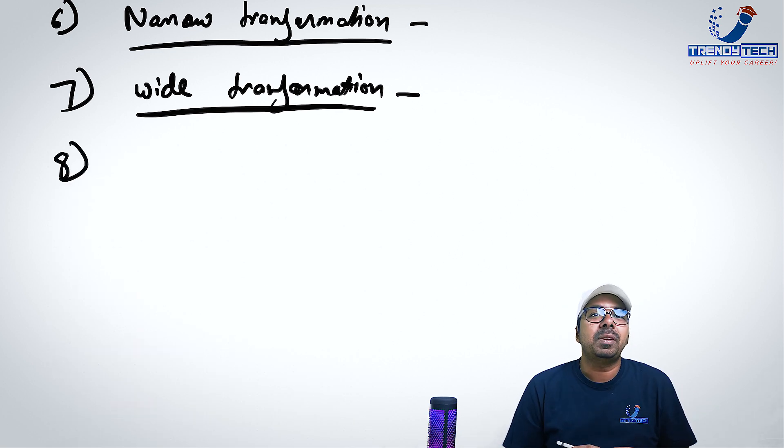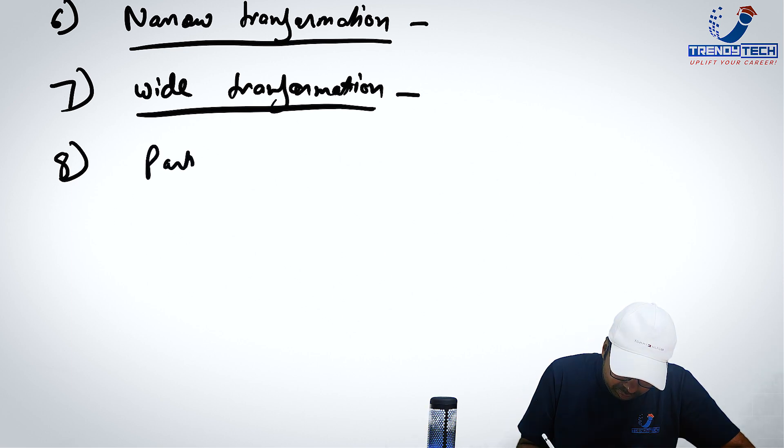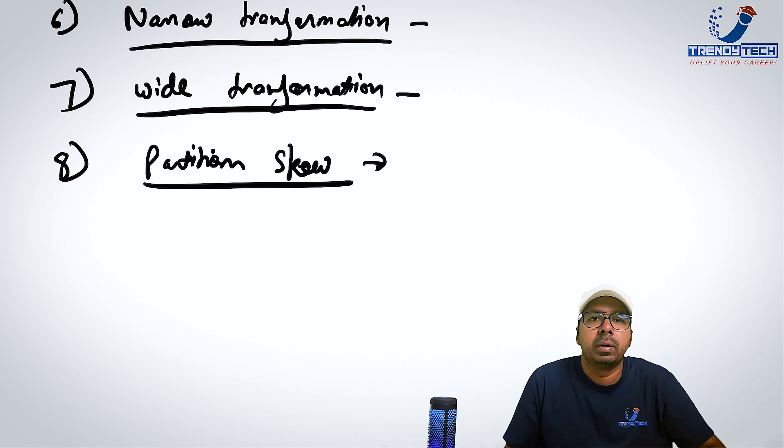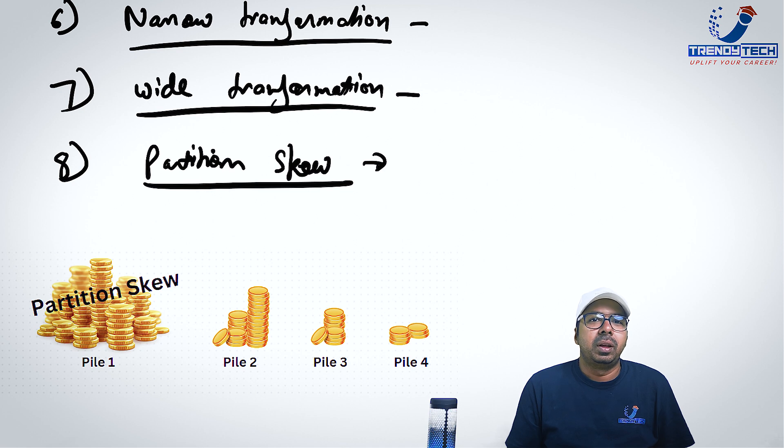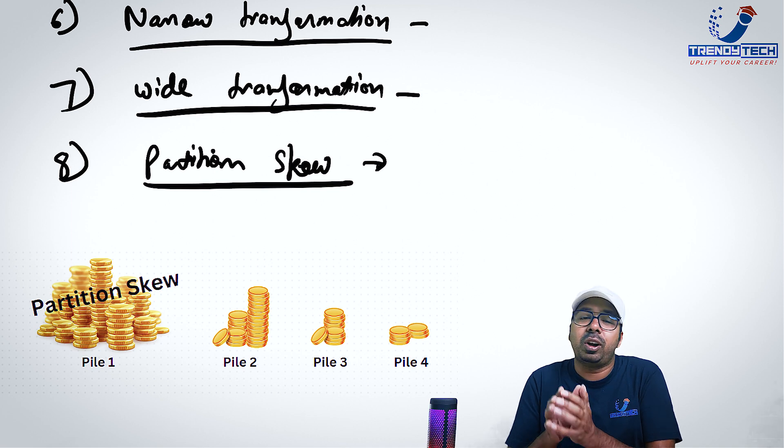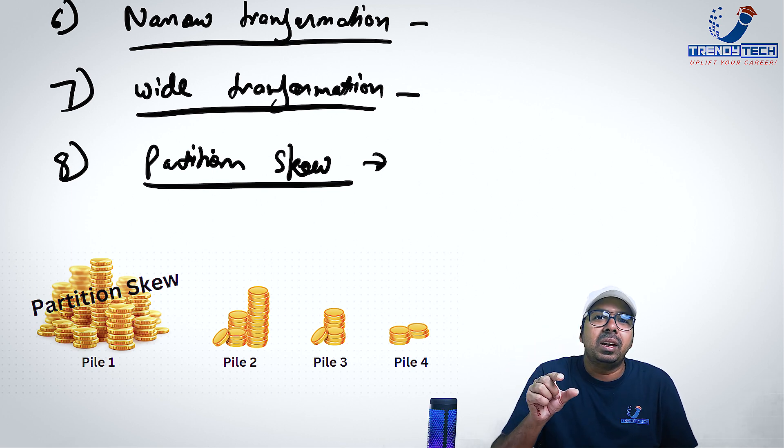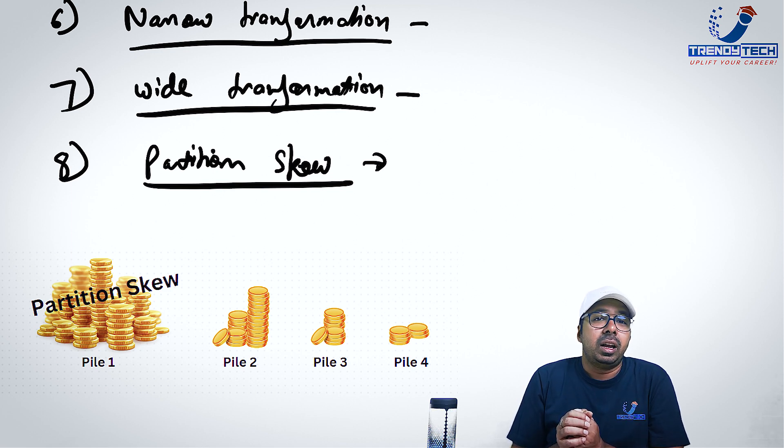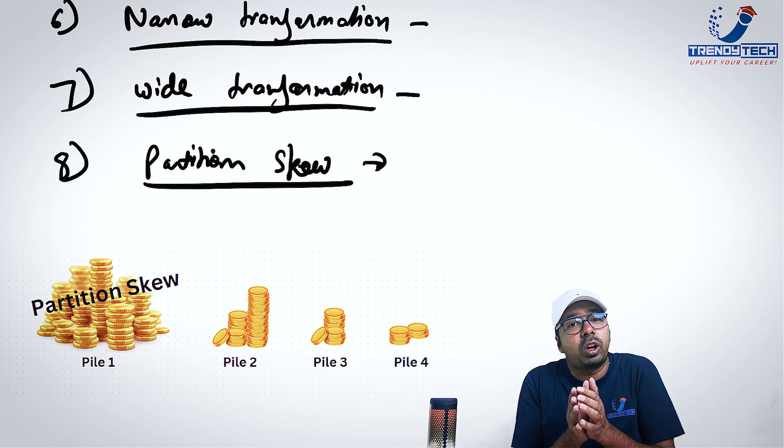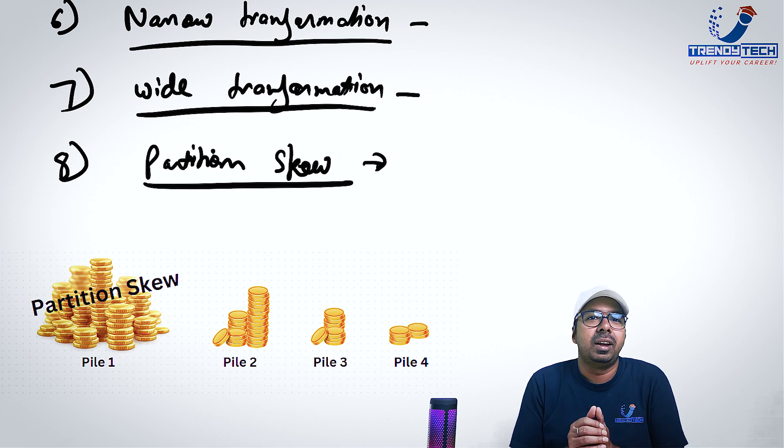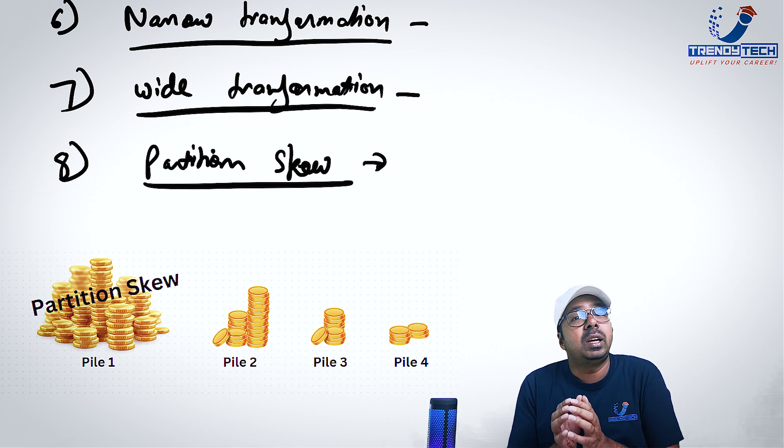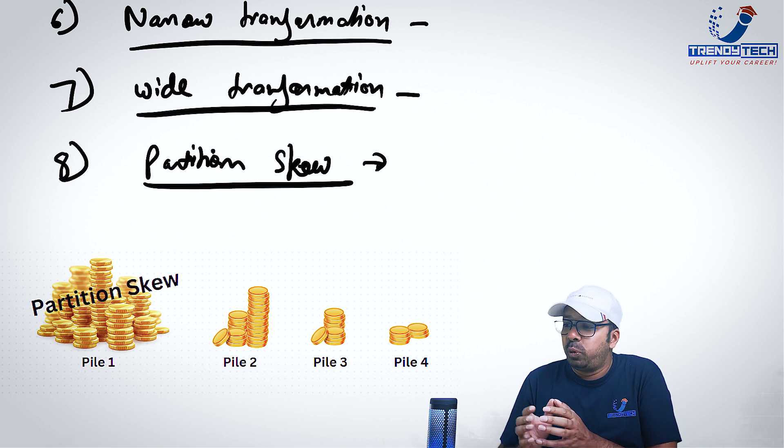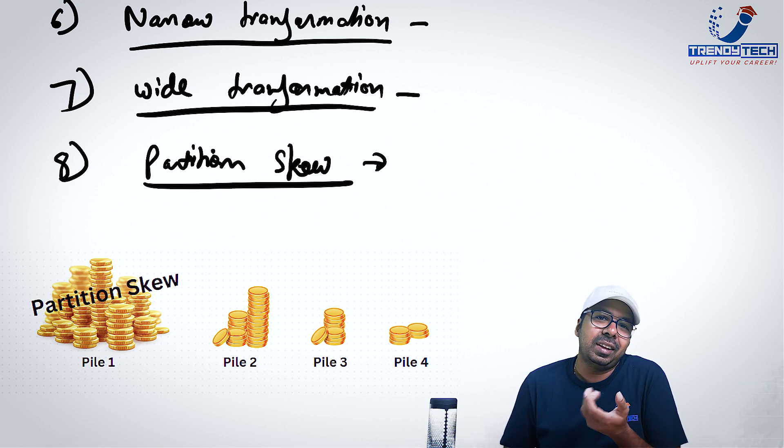Next in our list is partition skew. What is a partition skew? See, partition is basically whenever we, let's say, do a join or a group by, then same key would move in the same partition. Now, if one key is occurring more number of time than other, then it will lead to a partition skew where one person has to handle more data than others.